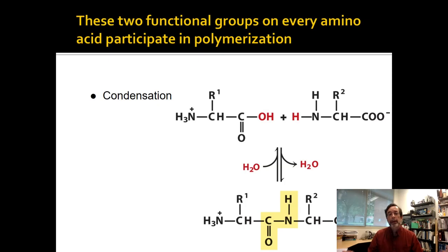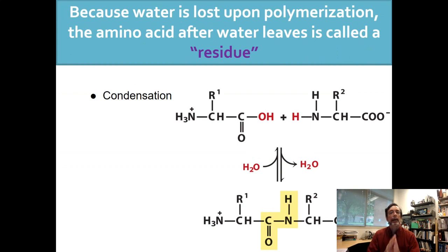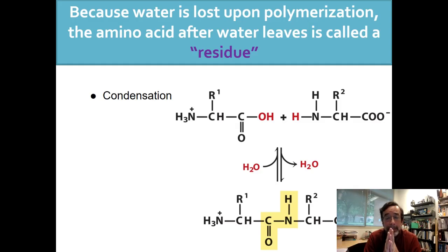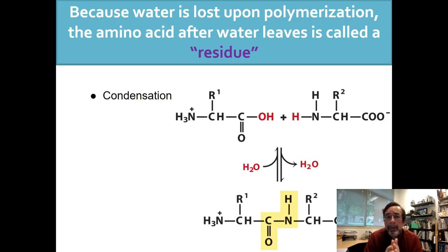Just to remind you — we've shown this before — condensation brings an amino group and an acid group together and creates a covalent bond. It is an amide linkage, which is like a functional group. Water leaves, so we call that condensation because the water is leaving and condensing elsewhere from the molecule. The individual side chains that used to be amino acids are called residues — that's why we use that term, because they are what is left after the water condenses away from them.